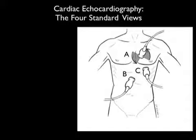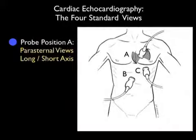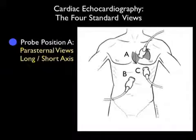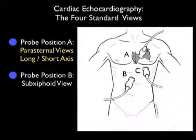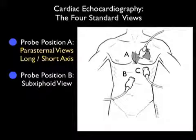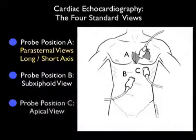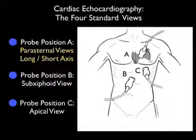Let's begin by reviewing the four standard views of the cardiac echo exam. The first view, as shown in probe position A, is the parasternal views, both long and short axis planes, and this is going to be performed directly on the anterior chest wall. The second view is where probe position B is shown here, coming from the abdominal position or the subxiphoid view of the heart.